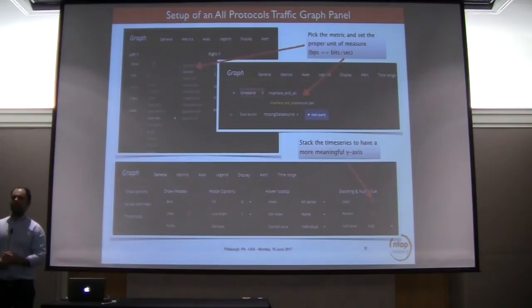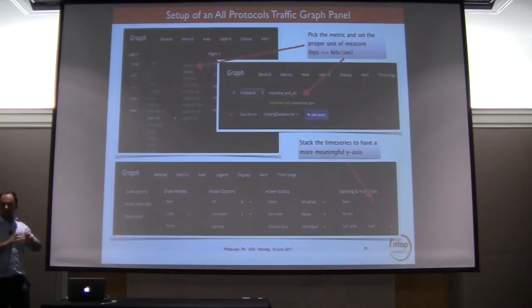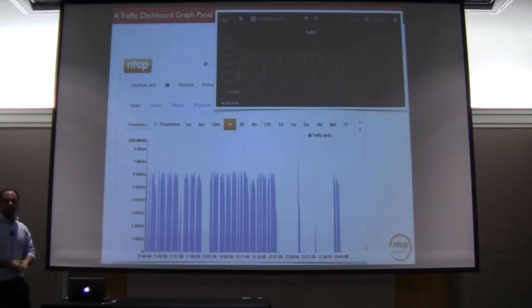Question: is the data being pulled from RRDs or is it trickling to Grafana over time? It's currently pulled from RRDs. We would like to stream data using WebSockets to Grafana — we are in touch with the Grafana team who are developing technology that will allow us to use WebSockets so we can keep a connection open and stream data points one after the other. But for now it is RRDs. A follow-up question: is this only available in the pro version or the standard? It's available in the standard version.